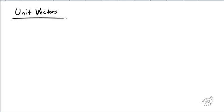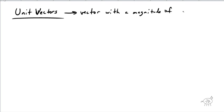Remember we talked about a unit circle? The radius of a unit circle was 1. So that's what a unit vector is — a unit vector is a vector with a magnitude of 1.